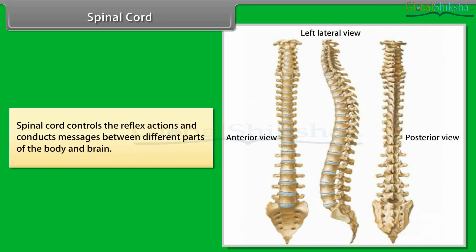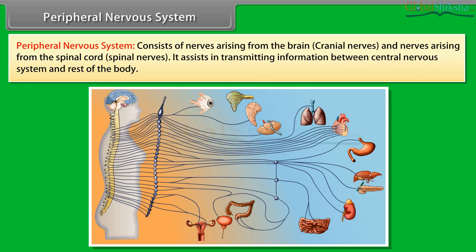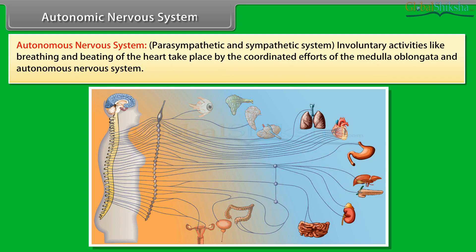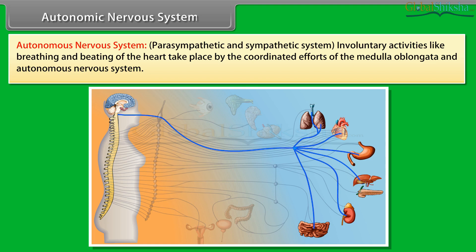The spinal cord controls reflex actions and conducts messages between different parts of the body and the brain. The peripheral nervous system consists of cranial nerves (from brain) and spinal nerves (from spinal cord), and assists in transmitting information between the CNS and the rest of the body. The autonomic nervous system includes the parasympathetic and sympathetic systems. Involuntary activities like breathing and beating of the heart take place by the coordinated efforts of the medulla oblongata and the autonomic nervous system.